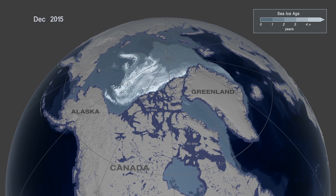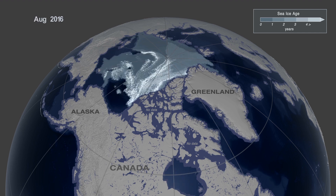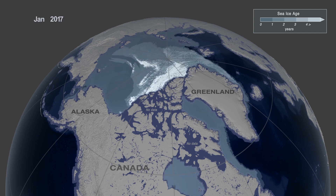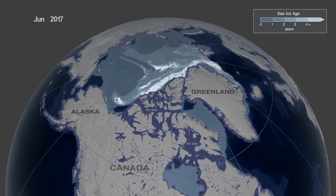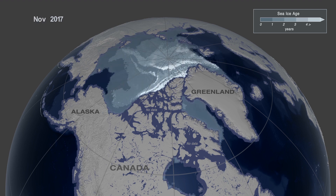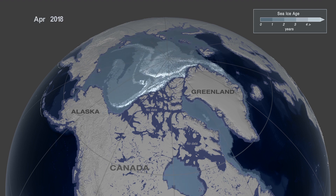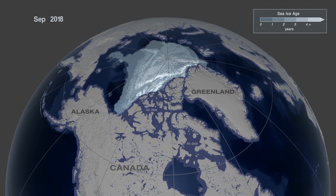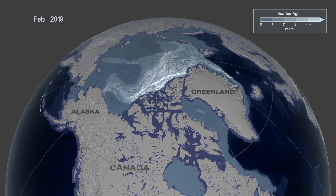As we get towards the more recent years, much of that oldest ice — the ice that's older than five years old, shown in bright white — has almost virtually disappeared from the Arctic Ocean. The Arctic is now dominated by younger and thinner ice.